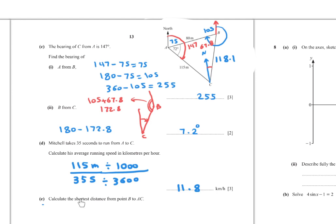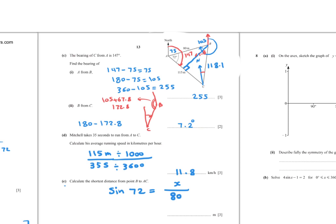Part (e): Calculate the shortest distance from B to AC. The shortest distance is the perpendicular distance. Drop a perpendicular from B to AC. Using the triangle with angle 72 degrees, the opposite side is x and the hypotenuse is 80. So sin 72 equals x over 80. Therefore x equals 80 times sin 72 equals 76.1 to one decimal place.